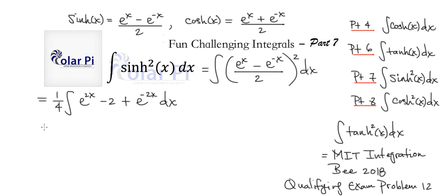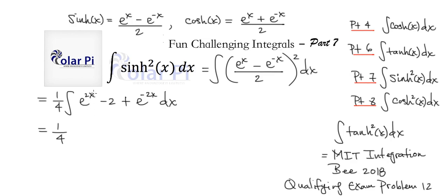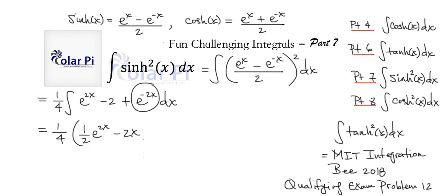Okay. So this is 1/4 times the integral. You can split this into three different integrals, but we could just do it all at once. The integral of e to the 2x is 1/2 e to the 2x, the integral of minus 2 is minus 2x, and the integral of e to the negative 2x is negative 1/2 e to the negative 2x, plus C.